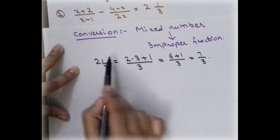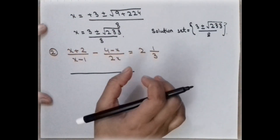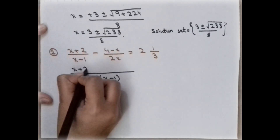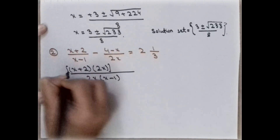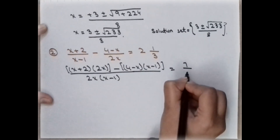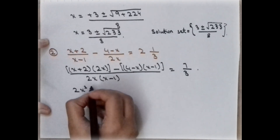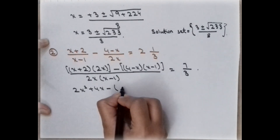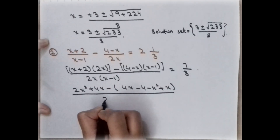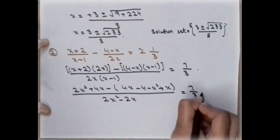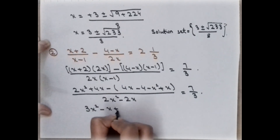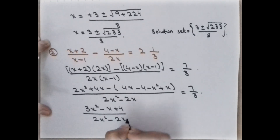The first step is to express the equation in the standard quadratic form. We take LCM: (2x - 1)(x + 2) - (4 - x)(2x) = 7/3 after simplification. Expanding gives 2x² + 4x - 4x - 4 - x² + x, and the denominator term gives 2x² - 2x, which equals 7/3.